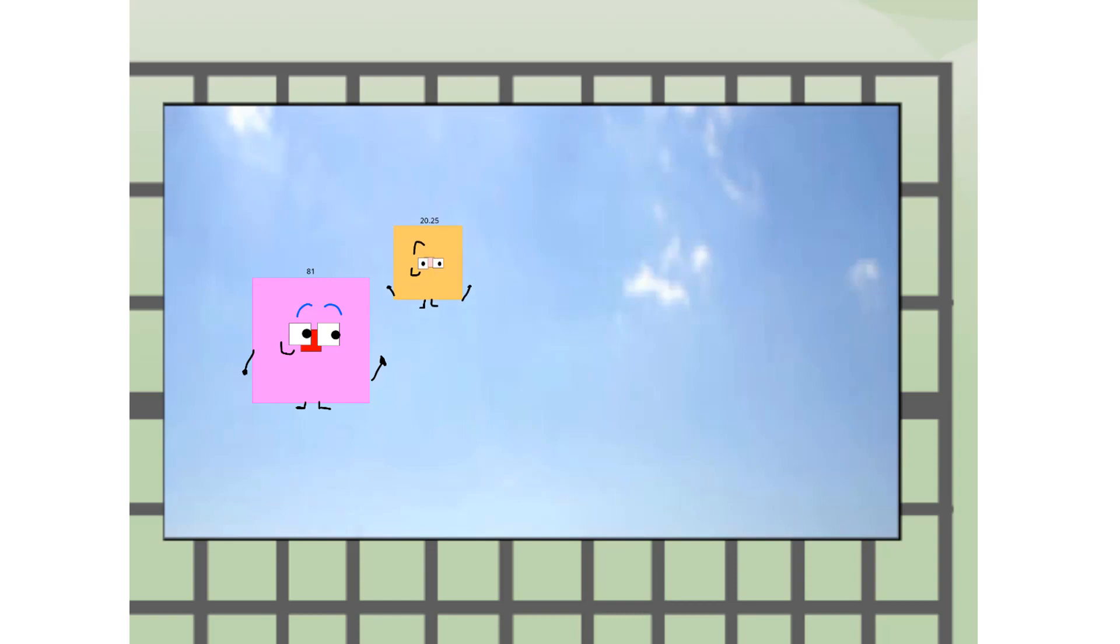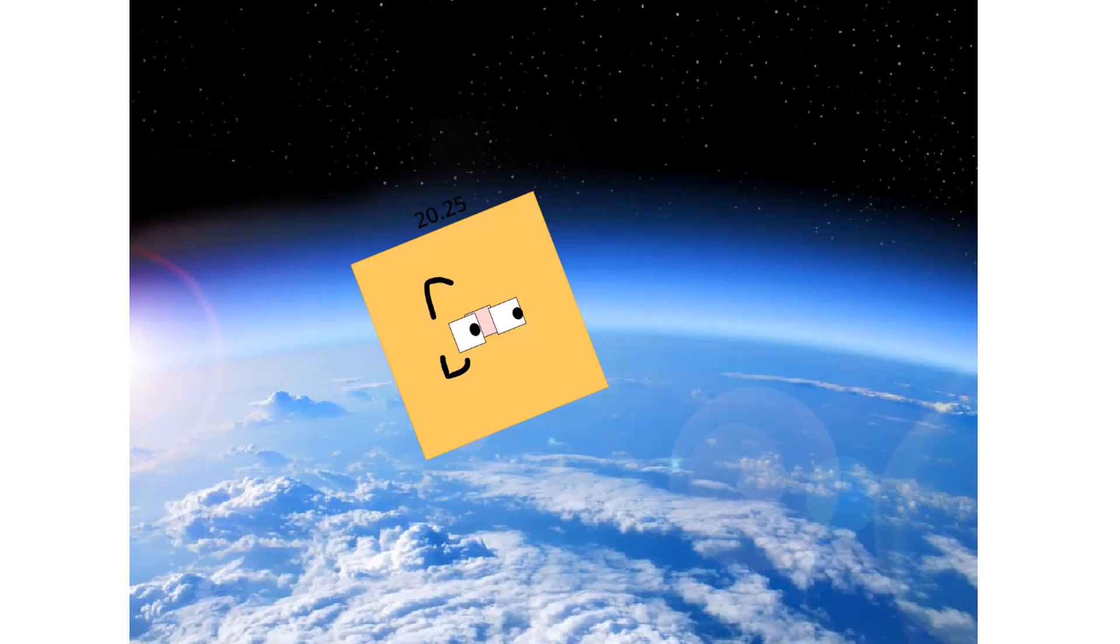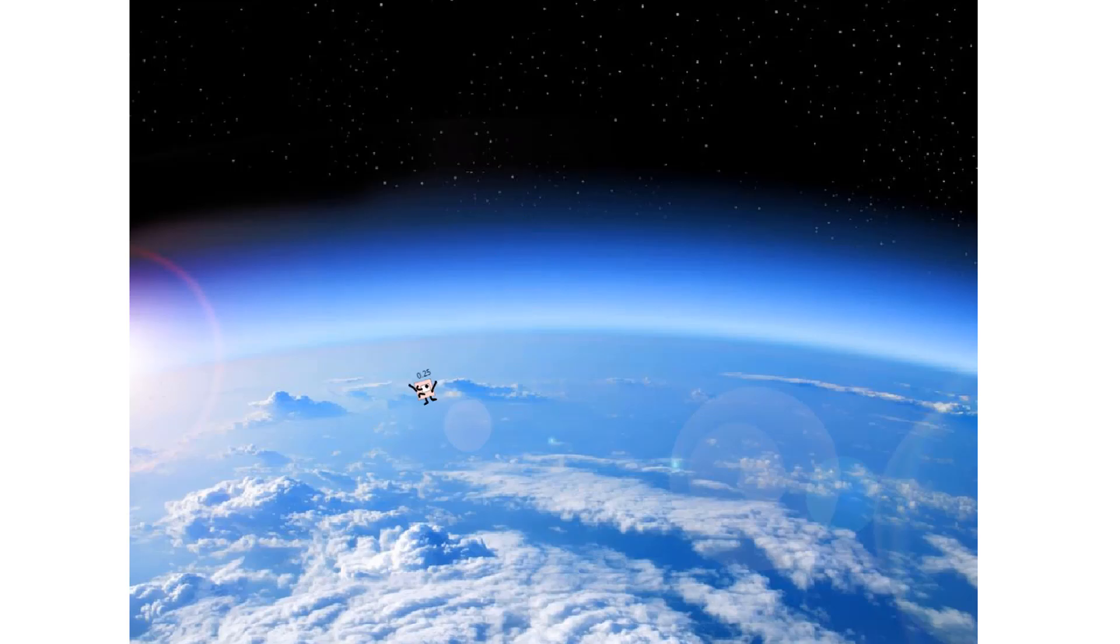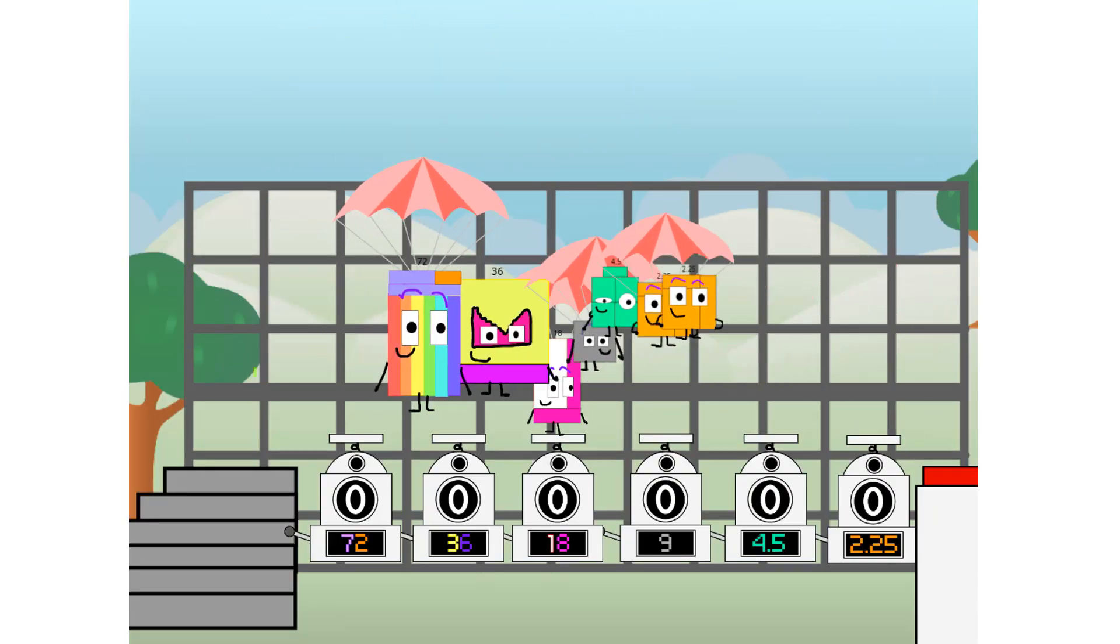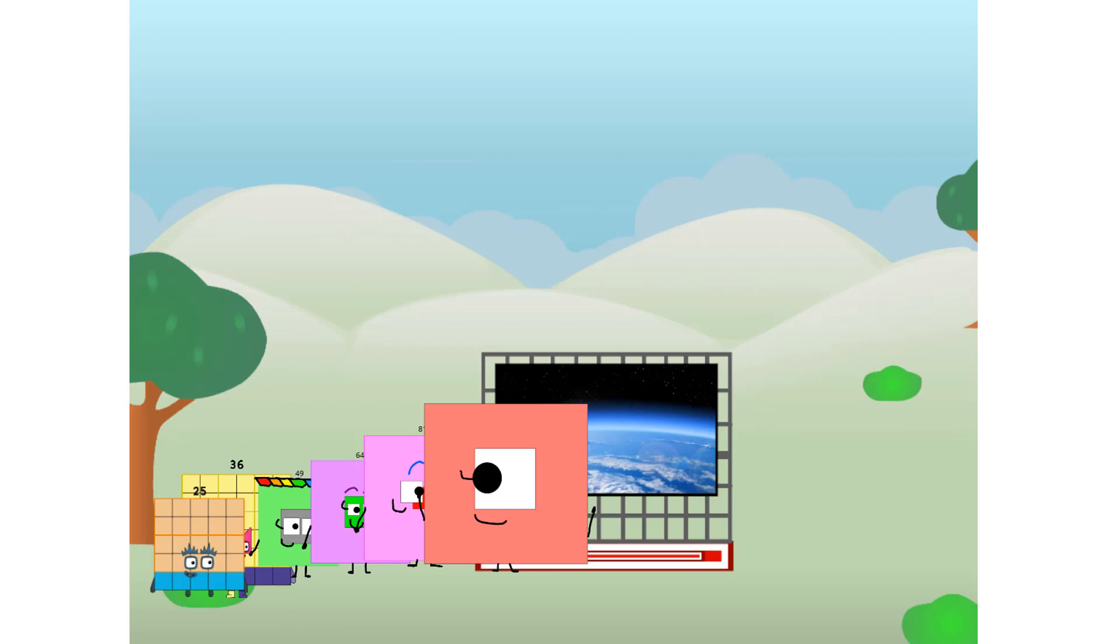We're two squares. The edge of space. Nearly there. Amazing. We sent a square to the edge of space without rockets. We just need a little more power.